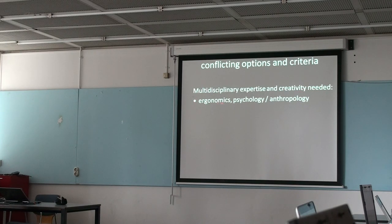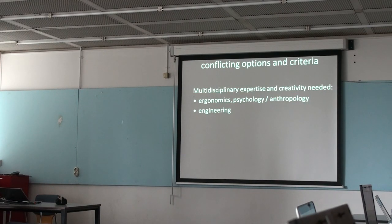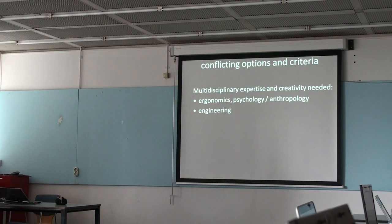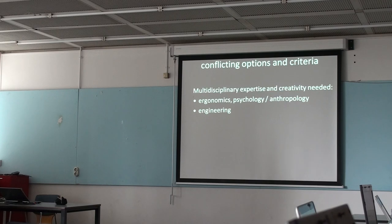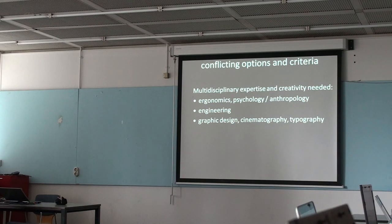You need disciplines of ergonomics, psychology, and anthropology — the disciplines that focus on whether it fits human beings, fits a human culture, or fits people in a group. But there is also expertise and creativity in the domain of engineering: people who can build things, who can build software, hardware, and actually social structures. These are a completely different set of disciplines — the builders. And then there are people who make things look a certain way, like graphic design, cinematography, or typography. Typography is the science about how people can be made to read easily.